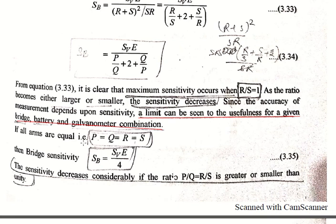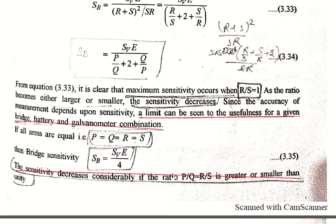When all four arms are equal — P = Q = R = S — the bridge sensitivity simplifies to Sb = Sv × E / 4. The sensitivity decreases considerably if the ratio P/Q = R/S is greater or smaller than unity; sensitivity is maximum at unity and decreases in both directions.